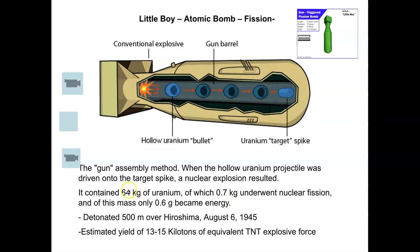That means roughly 63 kilograms of unreacted fissionable uranium was spread around like a dirty bomb — just exploding and dispersing radioactive material. That unreacted uranium actually caused more harm than the blast itself.